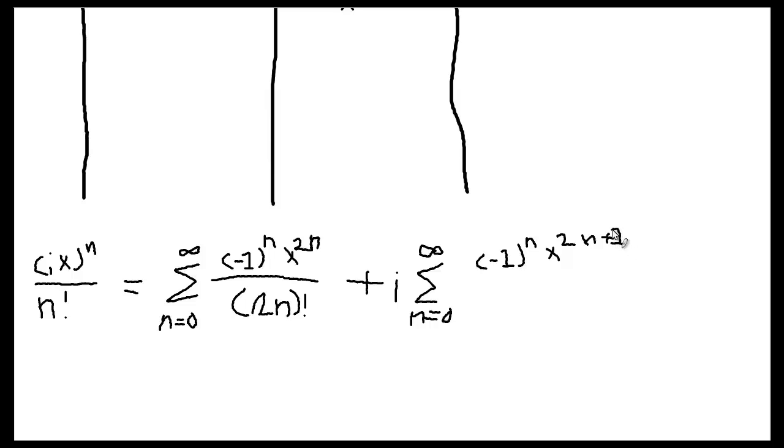So essentially, as you can see what's happened here. I've taken all the terms of the series that have i, and I've put them into one series. And I've taken all the ones that don't have i and put them into another. So the one that deals with i is going to be dealing with all odd integers. And the one that's not dealing with i is all even integers.